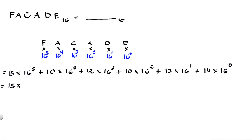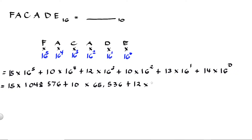Next is to simplify. So we have 15 times 16 raised to 5 is equal to 15,728,640 — this is a very huge number. Plus 10 times 16 raised to 4 is equal to 655,360. Plus 12 times 16 raised to 3 is equal to 49,152. Plus 10 times 16 raised to 2 is equal to 2,560.